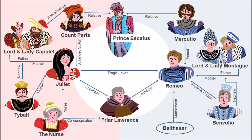Tenth is Friar Lawrence, who is a Franciscan monk. Eleventh is Prince Escalus, who holds authority in Verona. Twelfth is Count Paris, who is a kinsman of Escalus. Thirteenth is Balthazar, who is Romeo's servant. And fourteenth is a wet nurse who takes care of Juliet, but her name is not mentioned in the story.